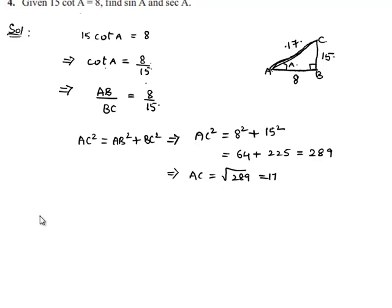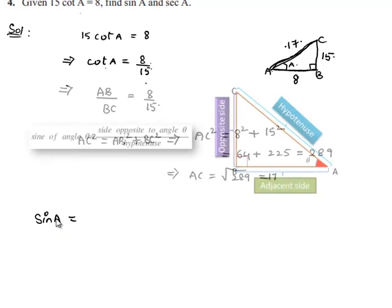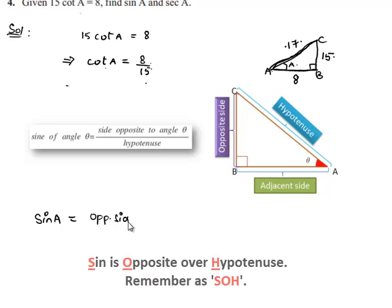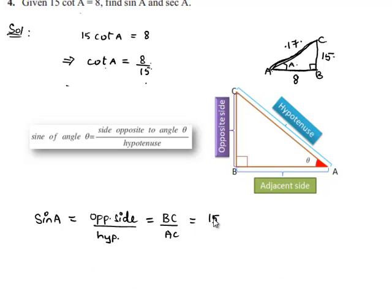Here firstly he asked us to find the value of sin A. We know that sin of an angle is equal to opposite side by hypotenuse. Here the opposite side of angle A is BC and hypotenuse here is AC, which is equal to BC is 15 and AC is 17.